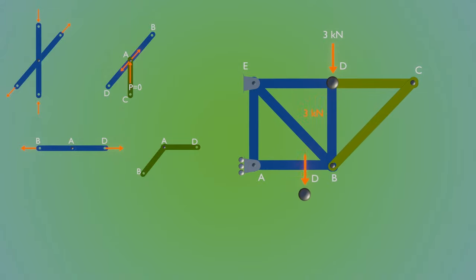Now isolate joint D, and take a look. 3 kN force acts downward, it is balanced by member DB in opposite direction. Similarly, member DC is zero. Therefore member DE must be zero, to be in equilibrium.